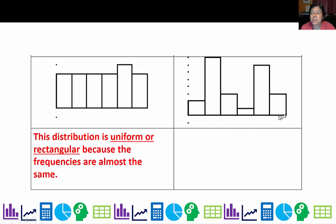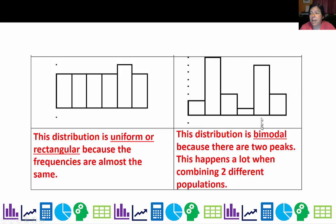If you see a distribution like this, it's called bimodal. And that's because there are two peaks. And this happens a lot when we have combined two different populations. A popular example would be, say, the heights of all the basketball players in a school. Well, you would have a higher distribution for the males, and then you'd have a peak for the females. And when you put them together, it gives you two peaks.